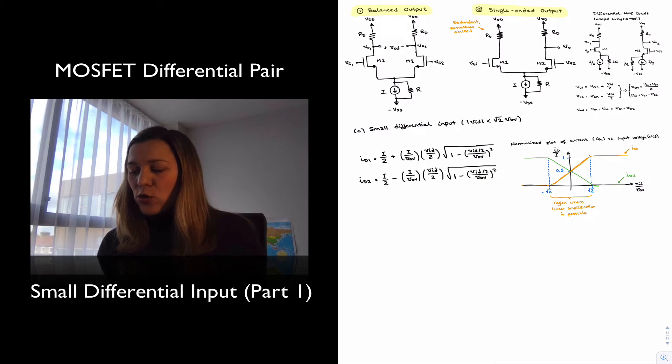We are now ready to take a look at the operation or the behavior of the MOSFET differential pair under the condition of a small differential input, meaning a differential input that is smaller than square root of 2 VoV.